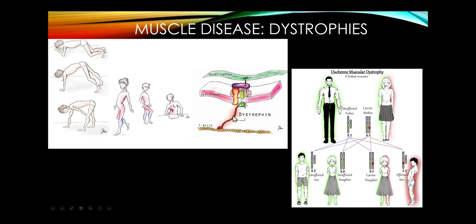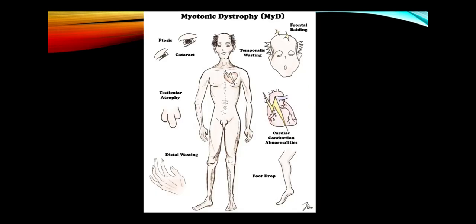Both Duchenne's and Becker's are now called dystrophinopathies, named after the abnormal protein. The most common adult-onset muscle disease or dystrophy is myotonic dystrophy — a classic facial appearance with droopy eyelids, frontal balding, facial weakness, and temporalis wasting. There are also non-skeletal muscle abnormalities: cardiac conduction problems, testicular atrophy, endocrine disturbances, and cataracts, which are very common. In the lower extremities, they have distal weakness with foot drop, which is an exception to the proximal weakness rule.